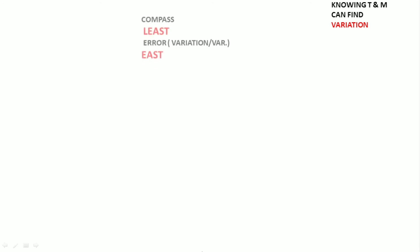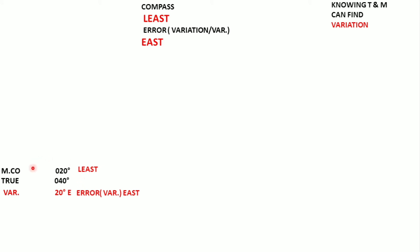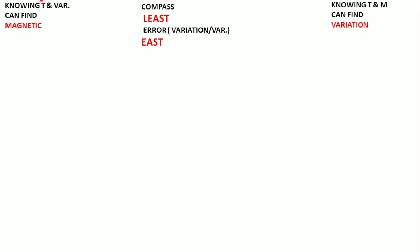Now if I know my true and magnetic, can I find out my variation? Compass least, error east. If my magnetic is less than true — compass least — variation is east: 20 degrees east. If I know true and variation, can I find out my magnetic? With variation east, compass should be least — compass should be less than true: 020.